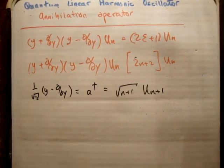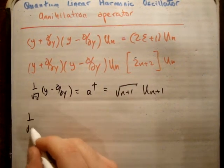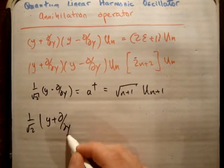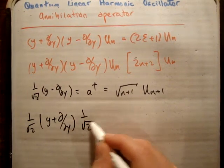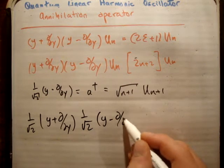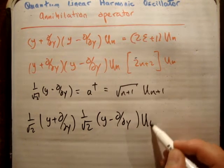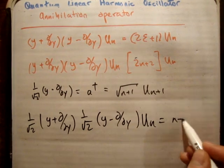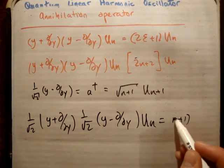So we have 1 over root 2, y plus d/dy, 1 over root 2, y minus d/dy, times UN, equals n plus 1 times UN.